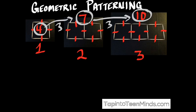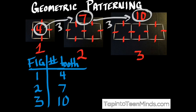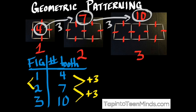We can also show this another way by creating a table, with the figure number on the left side and the number of toothpicks on the right. In figure one we have four toothpicks, figure two has seven, and figure three has ten. The table makes it easier to identify the pattern by noticing how much the number of toothpicks increases — each time the figure number goes up by one, the toothpick number goes up by three.